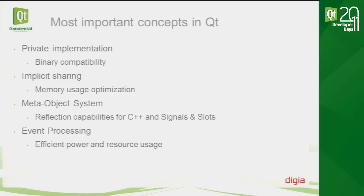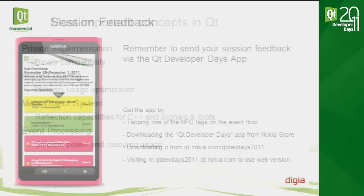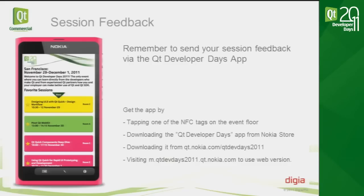To summarize all the most important concepts of Qt covered in this session: private implementation, needed for binary compatibility; implicit sharing, used for memory optimization; the meta-object system, which provides reflection capabilities for C++; signal/slots functionality; and event processing, which is needed for efficient power and resource usage. That's it — thank you for joining.